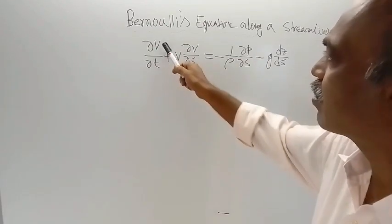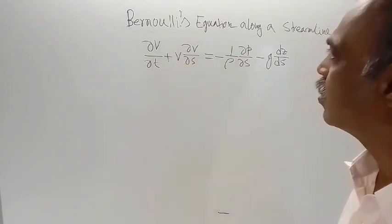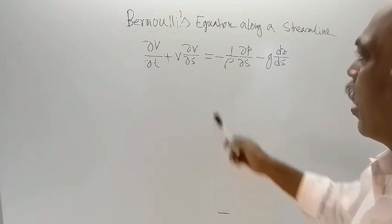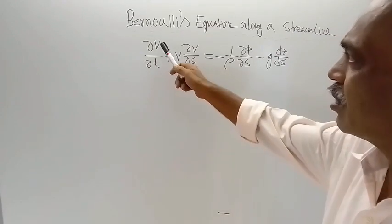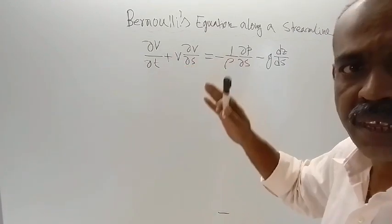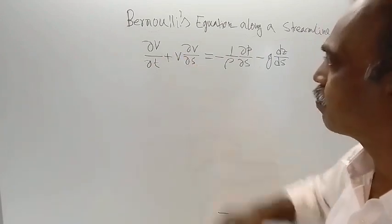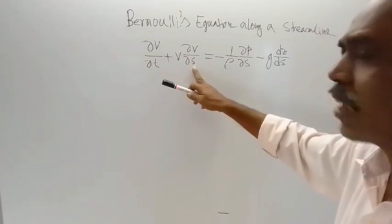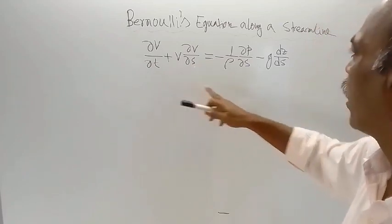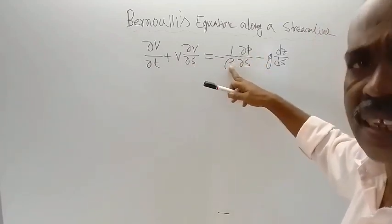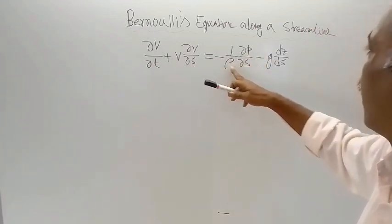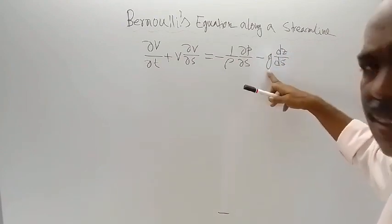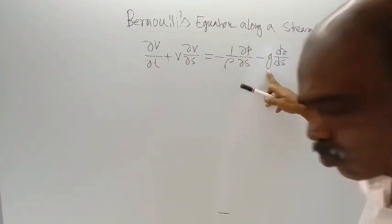In this equation, V is the velocity along the streamline, T is time, S stands for streamline, P is pressure, rho is density, Z is the elevation, and G is acceleration due to gravity.